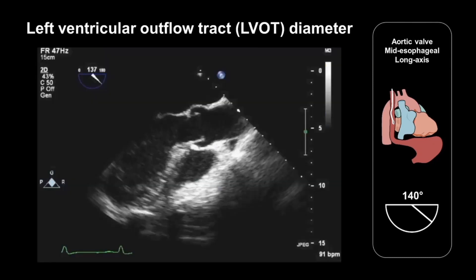We should also take some measurements in the long axis view. One of these is the diameter of the left ventricular outflow tract. This measurement is normally taken within half a centimetre of the aortic valve annulus. This measurement is used as part of a continuity equation when calculating the effective orifice area of the aortic valve, particularly useful in cases of aortic stenosis.